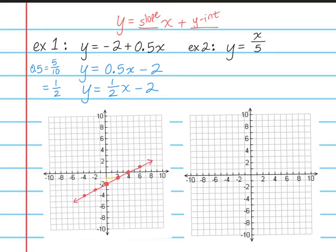Let's take a look at the second equation. Again, this is not written like we're used to seeing. Whenever you see x over 5 like that, you can think about it as an invisible 1 in front of the x. So we can rewrite this as 1 over 5, and pull the x out from the fraction and put it right after. Now it's written as something we're used to seeing. There is no y-intercept, so that means my y-intercept would be 0.